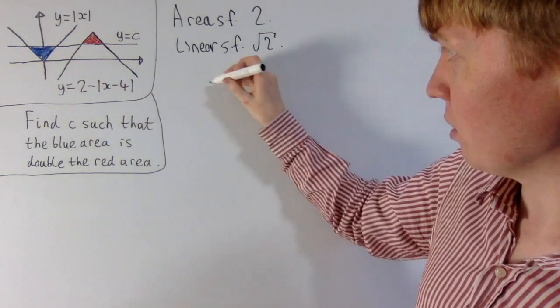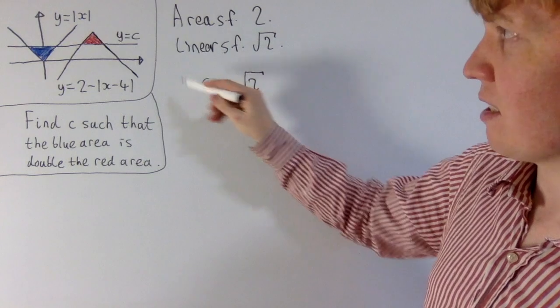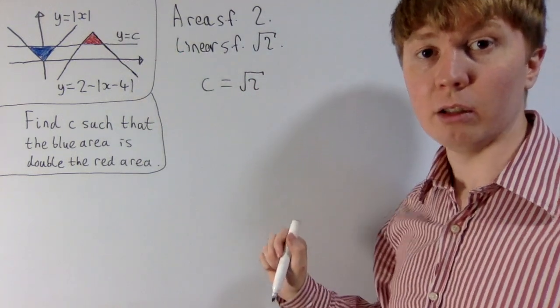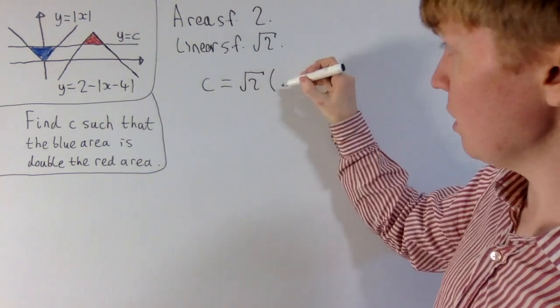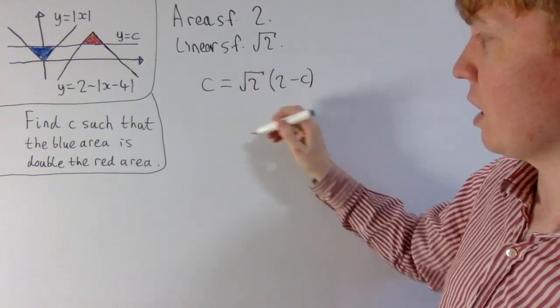So we know that the height of the blue triangle is just c. And we know that this is root 2 times as big as the height of the red triangle, which is 2 minus c. So c is equal to root 2 times 2 minus c. Just saying that this height is root 2 times bigger.